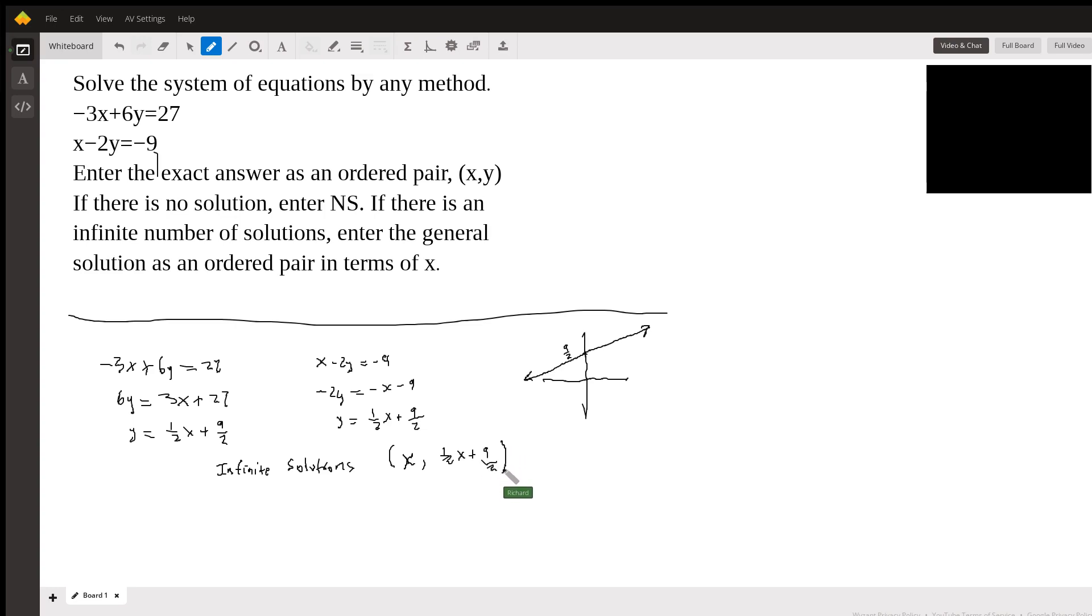And I think that's what the question is asking for. An ordered pair in terms of x. Okay. So there's nothing but x here. There's an x in the x position and there's an x in the y position. So that's an ordered pair involving only x. And that's our answer.